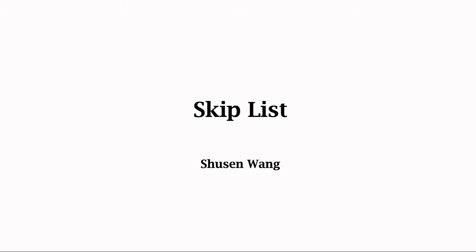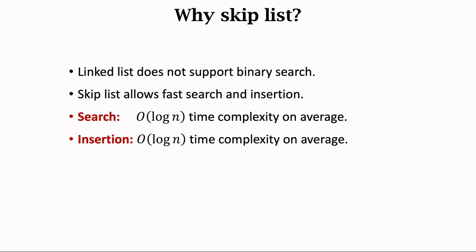In this lecture, we study skip list. Skip list is a variant of the linked list. Previously, we studied array, vector, and linked list. None of the three data structures can efficiently perform both search and insertion. Skip list is advantageous — it can perform both search and insertion in O(log n) time, where n is the size of the skip list, that is, the number of elements.